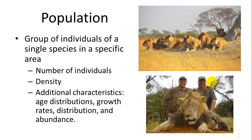When talking about populations, we can discuss total number of individuals or density. Other important metrics include age distribution — the different age classes within the population — as well as growth rates, distribution, and abundance.